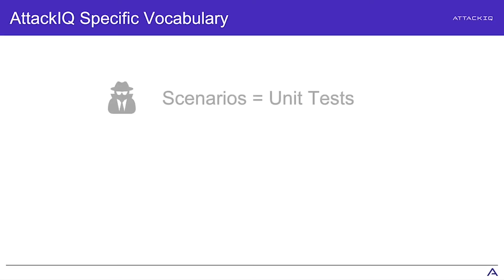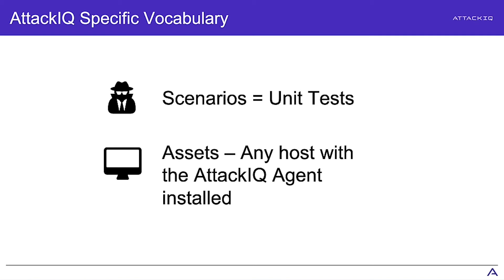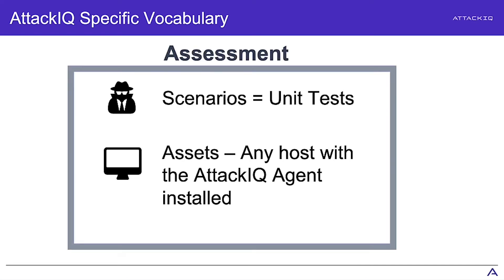Now that we have the notion of being threat-informed, let's talk about at a basic level how to actually do that. You are somewhat threat-informed if you do intelligence analysis, but you're not really there until you start coming up with test cases and applying them. A scenario is a unit test — an adversary behavior emulated by any means you choose, on a host where you are executing the technique. An assessment is a chain of techniques.